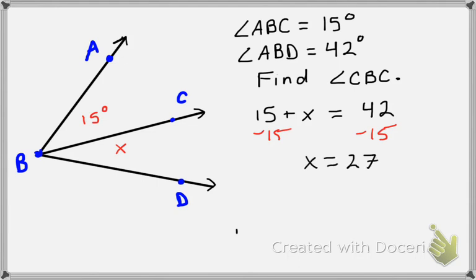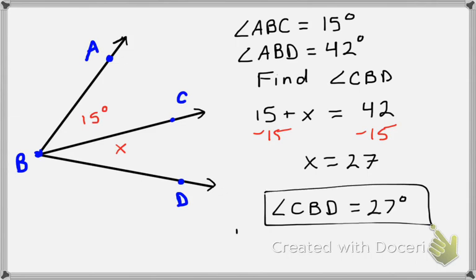Now while that is going to be our answer, let's make sure we answer the question. They want angle CBD. So angle CBD, oops, sorry, this should be a D. Angle CBD is 27 degrees. It is an angle, so make sure you give it degrees.